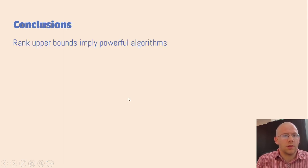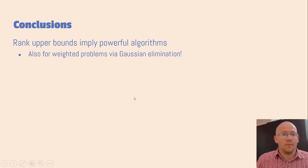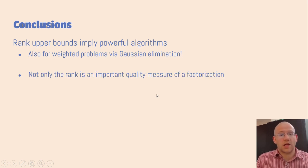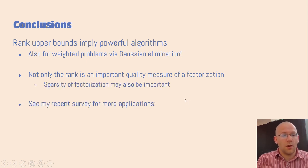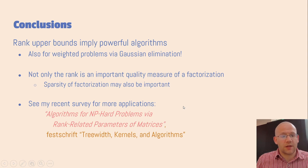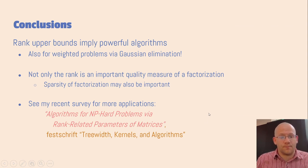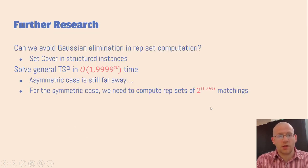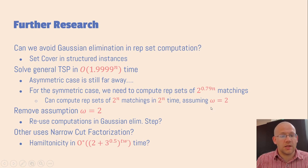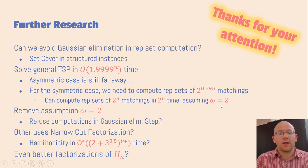In conclusion, rank upper bounds on the matching connectivity matrix imply powerful algorithms — also for weighted problems via Gaussian elimination. Not only the rank is important, but the sparsity can also be an important measure of a factorization. I want to advertise a recent survey on this topic. There are plenty of open questions. Thank you for your attention. Vielen Dank.